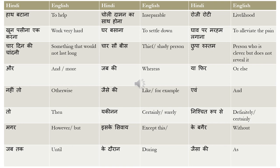'Magar' means 'however' or 'but'. 'Iske siwai' means 'except this'. 'Ke bager' means 'without' — for example, 'iske bager yeh nahi ho sakta' means 'without this this cannot happen'. 'Jab tak' means 'until'. 'Ke doraan' means 'during'. 'Jesa ki' means 'as' — for example, 'jesa ki aap dek sakte hain' means 'as you can see'.